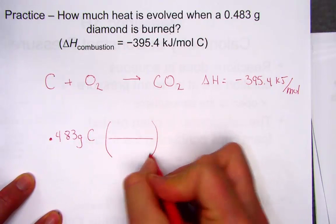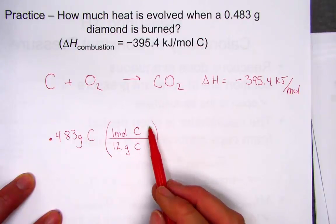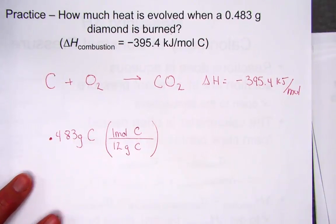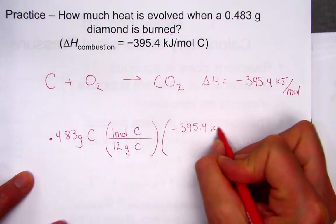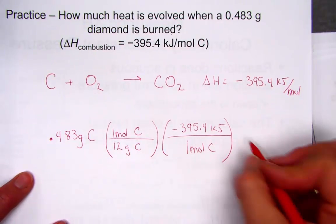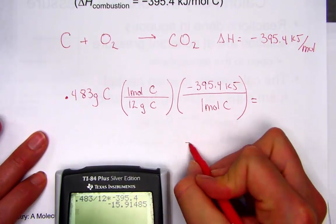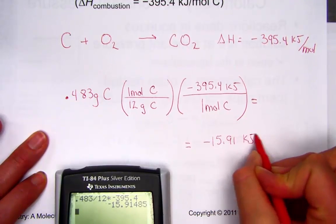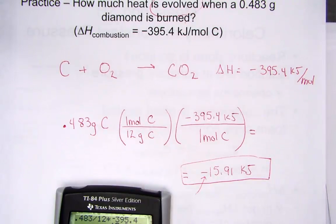We need to convert grams into moles. The molar mass of carbon is 12 — one mole weighs 12 grams. The stoichiometric ratio gives negative 395.4 kilojoules per mole of carbon. So 0.483 divided by 12 converts to moles, then multiplied by negative 395.4 kilojoules — the heat of combustion is negative 15.91 kilojoules. The negative sign shows heat is being released, which is also called evolved. Evolution of heat is an exothermic process.